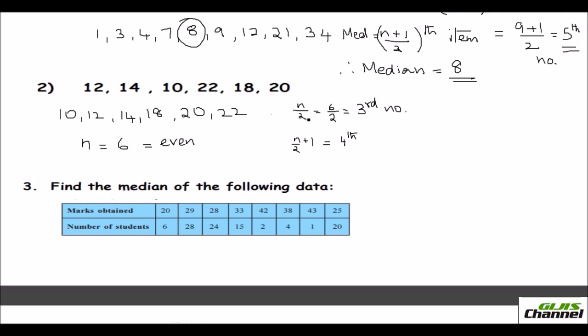You got whatever you got by doing n by 2, the next number, fourth number, and its average. The average of these two numbers will be your median.